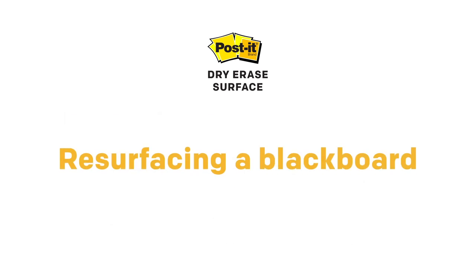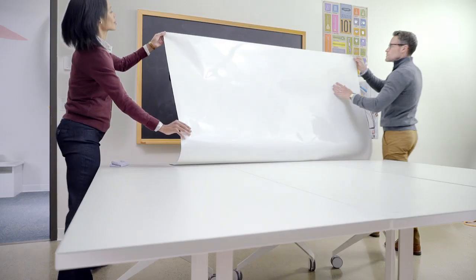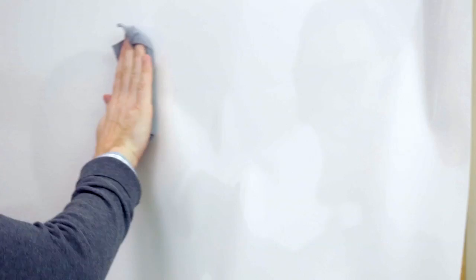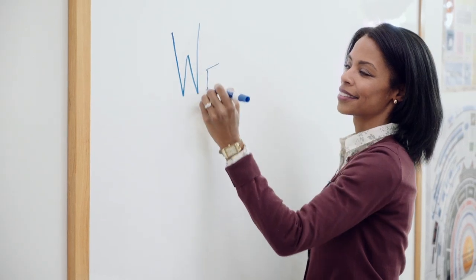Transform an existing blackboard into a whiteboard with Post-It dry erase surface. The high-performance material is easy to install and stain proof, making it remarkably simple to update and transform your teaching environment.